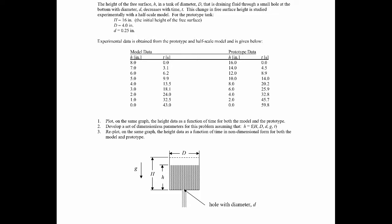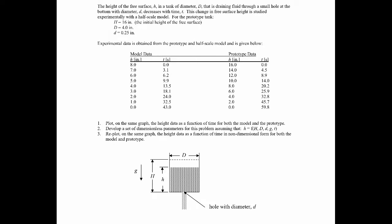We have a prototype device and we're also making a half-scale model. The prototype tank dimensions are given, and the half-scale model divides all of those by two. We gather some experimental data: at different times we measure the height of the free surface for the prototype, and then we do the same thing for the model — at different times we measure the free surface height.